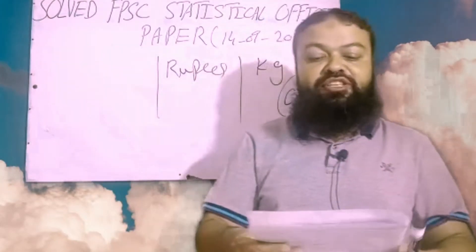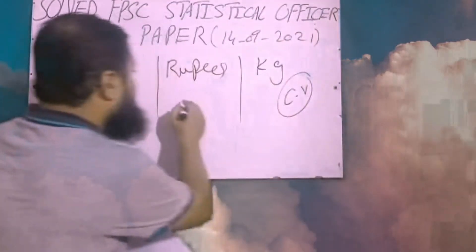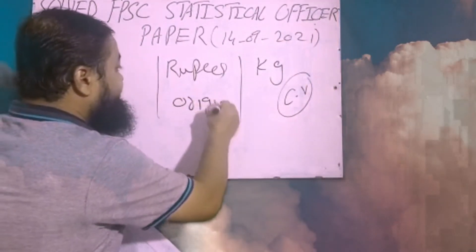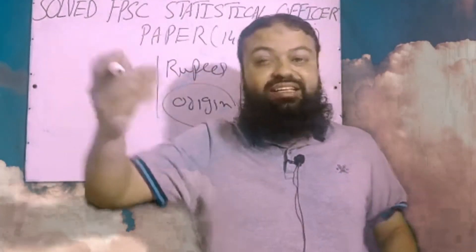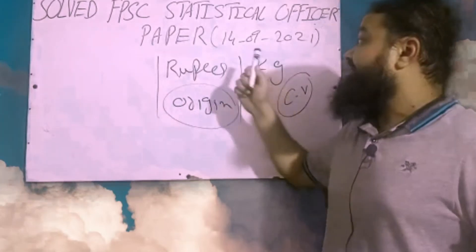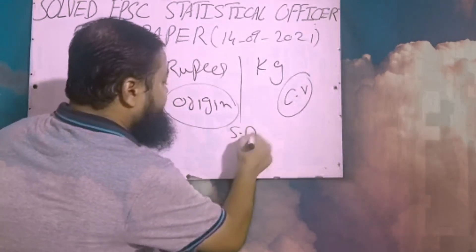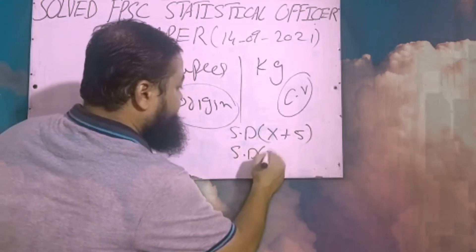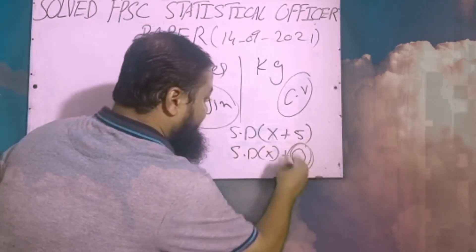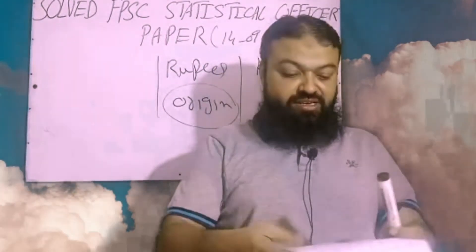Question number seven: which measure of dispersion is the best one? Standard deviation is the correct option. Question number eight: standard deviation is independent of origin. If you add or subtract values from all values of the data set, the standard deviation and variance are not affected. For example, the standard deviation of (x + 5) equals the standard deviation of x — adding or subtracting does not affect the standard deviation.